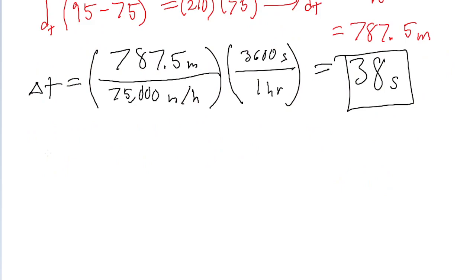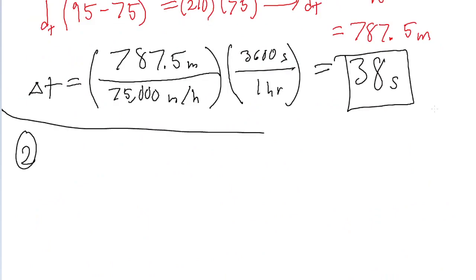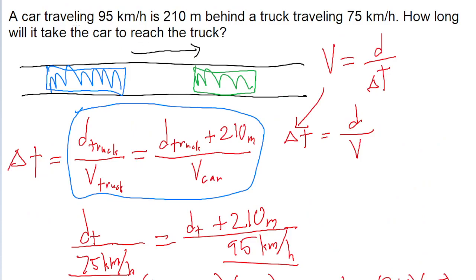There is another method that requires fewer steps, though it might be trickier for beginners. This second method is based on reference frames. Instead of looking at the problem from the reference frame of the ground — standing on the side of the road watching the cars go by — we can look at it from the reference frame of the truck, imagining we are in the truck watching the car approach. From the truck's reference frame, it does look as though the car only needs to travel 210 meters to reach us.